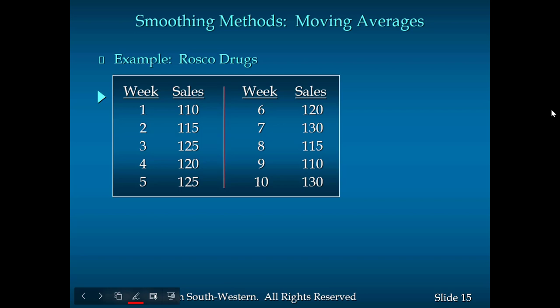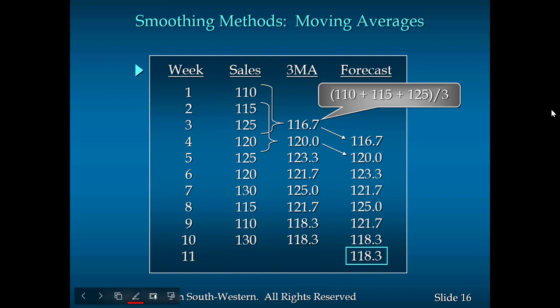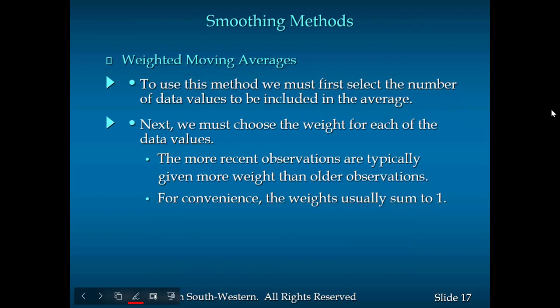We have 10 weeks of sales data. To calculate the 3-period moving average, for the first forecast we add 110, 115, and 125 to get 350, then divide by 3 to get 116.67. For the second, we add 115, 125, and 120, divide by 3 to get 120. For the next, we add 125, 120, and 125, divide by 3 to get that value. The 3-period moving average becomes the forecast for the next period.